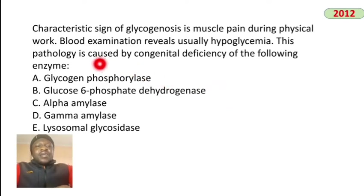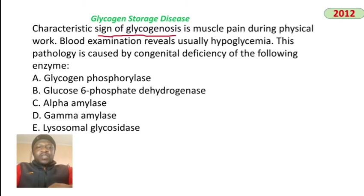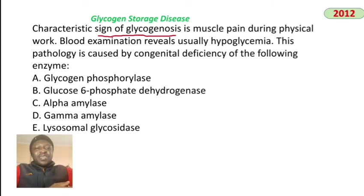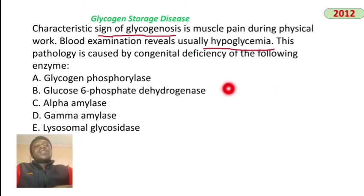Question one: characteristic sign of glycogenosis. Glycogenosis is a glycogen storage disease. We'll discuss glycogenolysis — the breaking down of glycogen to produce glucose — because this patient's blood has low glucose. The characteristic sign is muscle pain during physical work, and blood examination reveals hypoglycemia. This pathology is caused by a congenital deficiency of a certain enzyme.